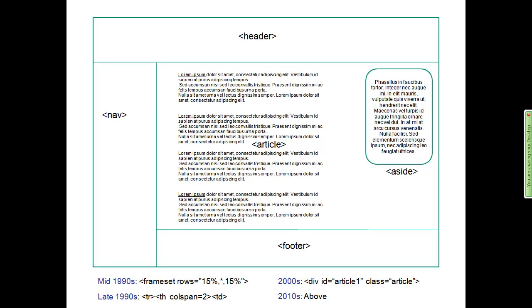At the highest level, the header, nav, aside, and footer tags have a lot of use. Back in the mid-90s we used frame sets. Then in the late 90s we did tables — table row, table header, table data. That's how we taught people to build web-based applications through CGI technologies, before Java started building servlets.